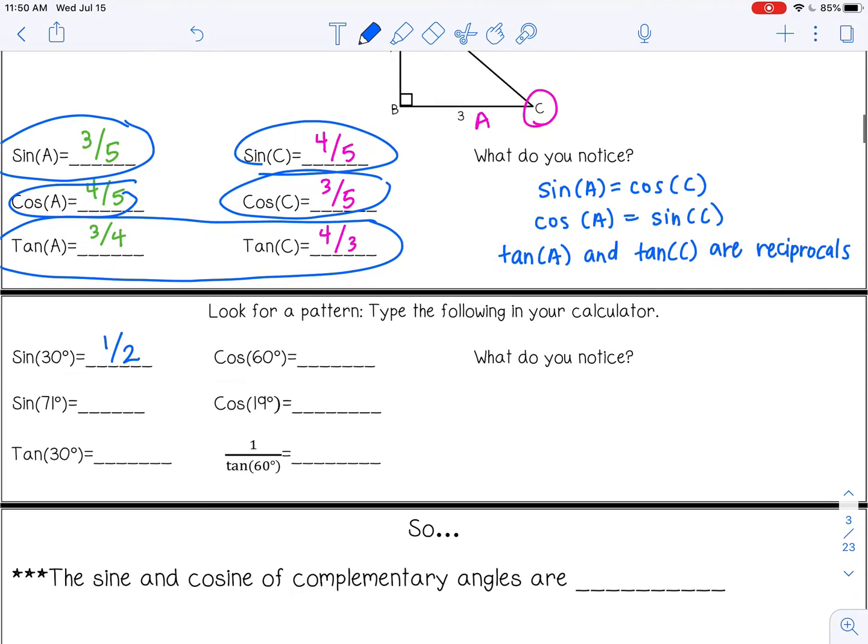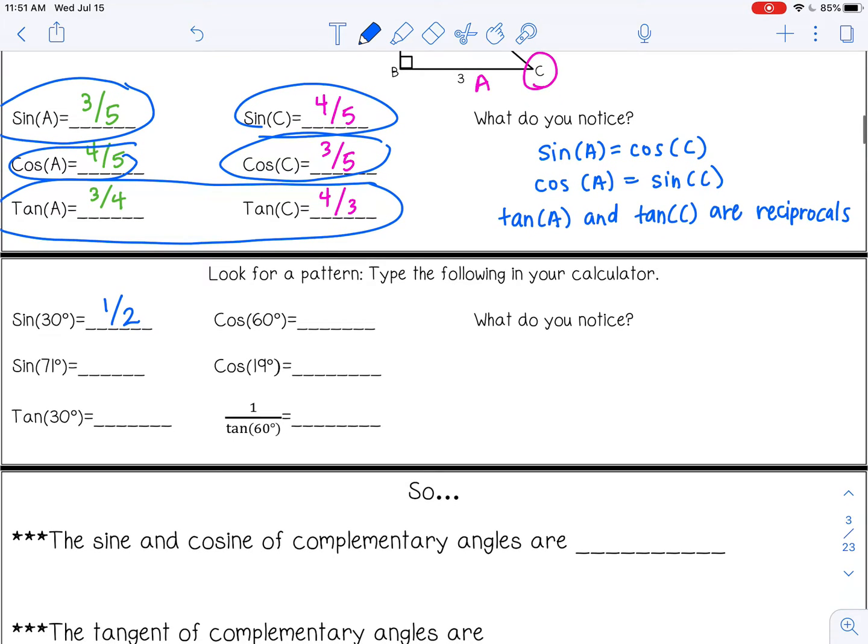All right, let's try another one. Sine of 71. So sine 71. Enter. Now, this is going to be a long decimal. Let's just round it to the thousandths place. So 9, 4, 5, 5. That would round to 9, 4, 6. Okay, pause the video now and try to type the other ones in your calculator by yourself and write down what you get.